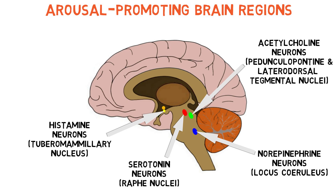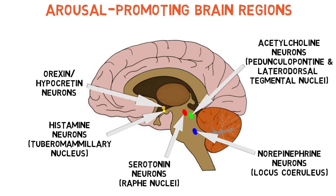The tuberomammillary nucleus is activated by neurons in the hypothalamus that release orexin, also known as hypocretin. Antihistamines inhibit the histamine neurons in the tuberomammillary nucleus, which is why they can cause drowsiness in some people.